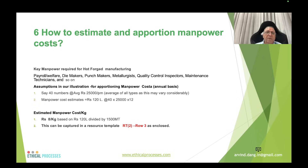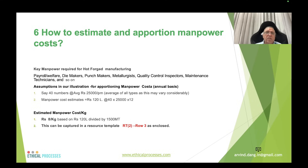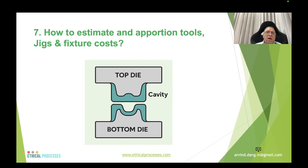For manpower cost, key personnel in a hot forging plant include die makers, punch makers, metallurgists, quality control inspectors, and operators. Assuming 40 persons at an average salary of ₹25,000 per month, annual manpower cost is ₹120 lakhs (40 × ₹25,000 × 12). Cost per kg = ₹120 lakhs ÷ 1,500 metric tons = ₹8 per kg, shown in row 3.